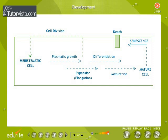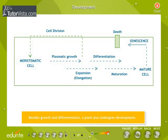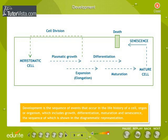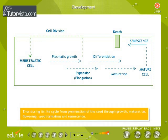Besides growth and differentiation, a plant also undergoes development. Development is a sequence of events that occur in the life history of a cell, organ, or organism, which includes growth, differentiation, maturation, and senescence, the sequence of which is shown in the diagrammatic representation. Thus during its life cycle, from germination of the seed through growth, maturation, flowering, seed formation, and senescence.